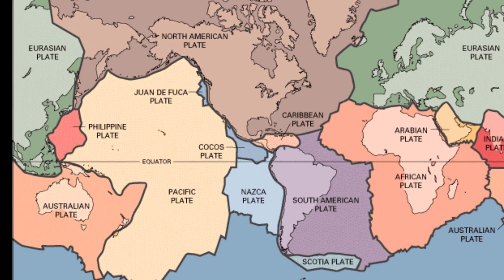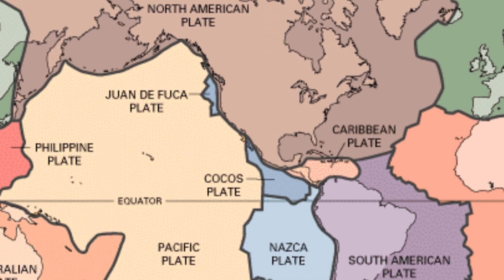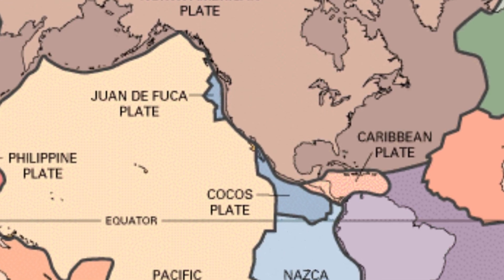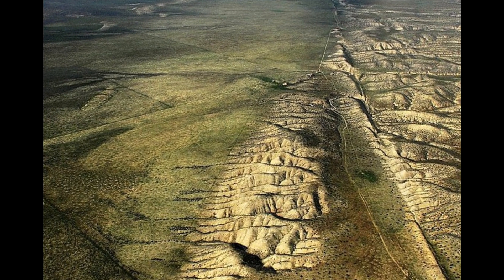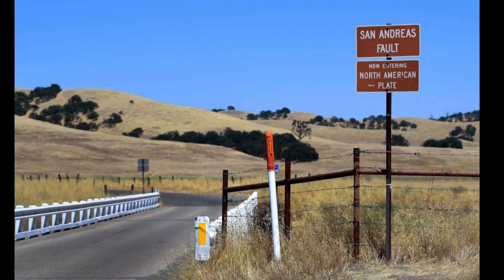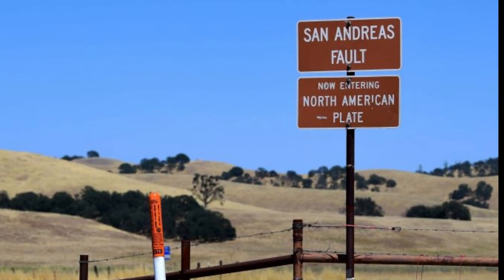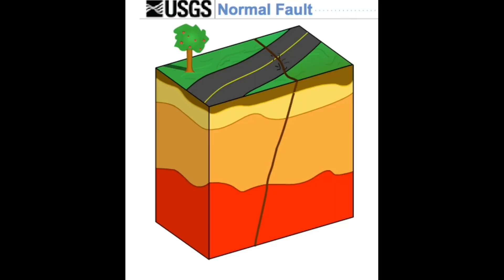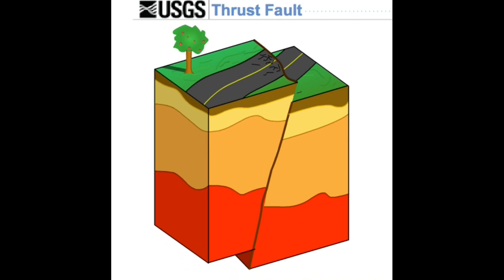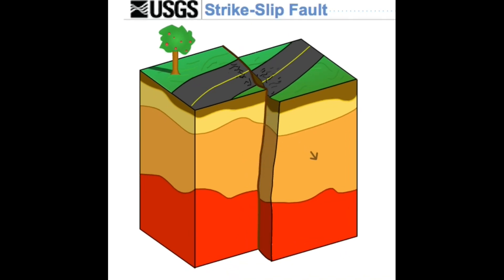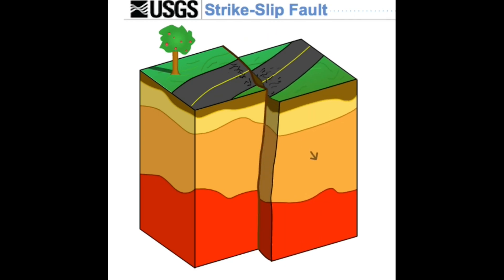It's a fault that bounds continents or plates — in this case, the Pacific Plate to the west and the North American Plate to the east. What makes the San Andreas Fault a little different is that it's called a transform or strike-slip fault. That means the plates slide past one another in a horizontal manner, rather than one dropping down or overriding another as in a normal fault or thrust fault, which we can see here.